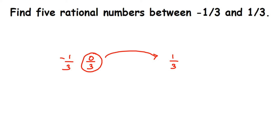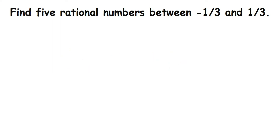This means we have to use another method to find more rational numbers between these two. So instead of using minus 1 by 3 and 1 by 3 directly, we're going to find equivalent rational numbers for minus 1 by 3 and 1 by 3. Equivalent means it equals the same value but looks different. We can find equivalent rational numbers by multiplying or dividing the numerator and denominator by the same number.